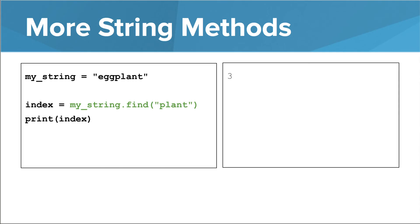It looks in the string you call it on for the first instance of the argument string. In this example, it'll look in my_string for the first instance of plant. It returns the index at which the argument string starts. Here, plant starts at index 3 in eggplant, so the find method returns 3.